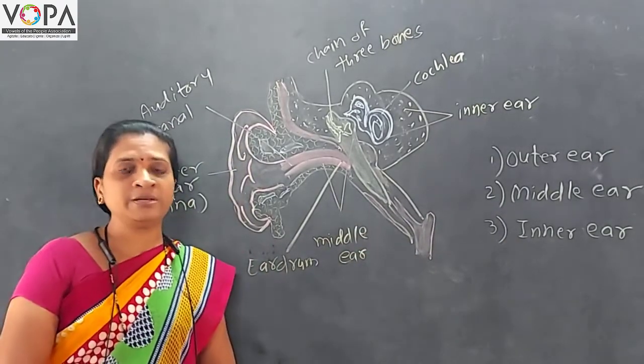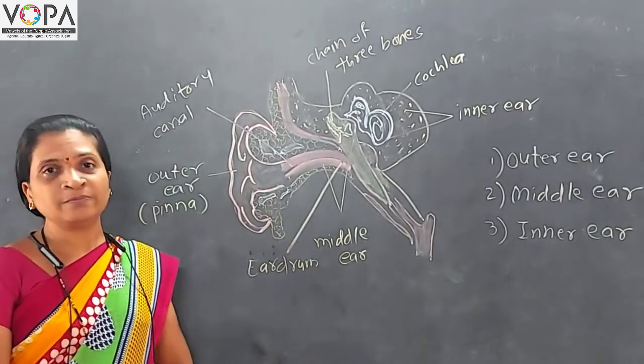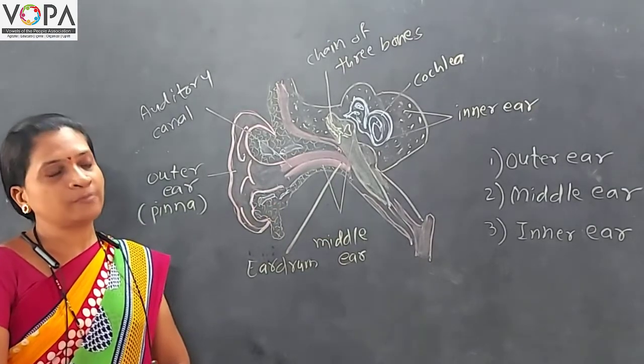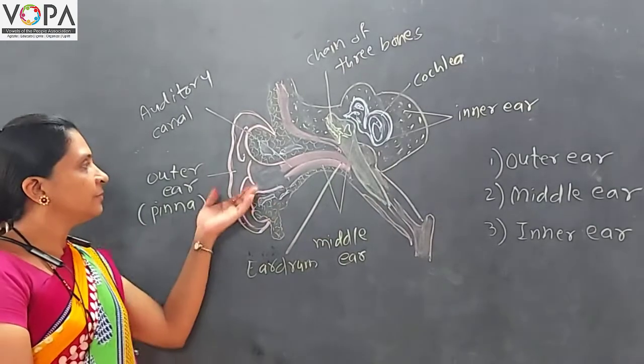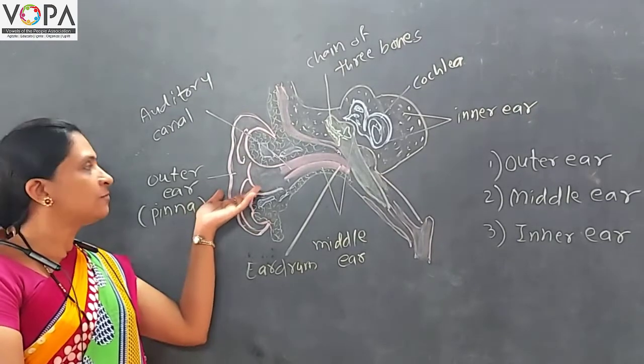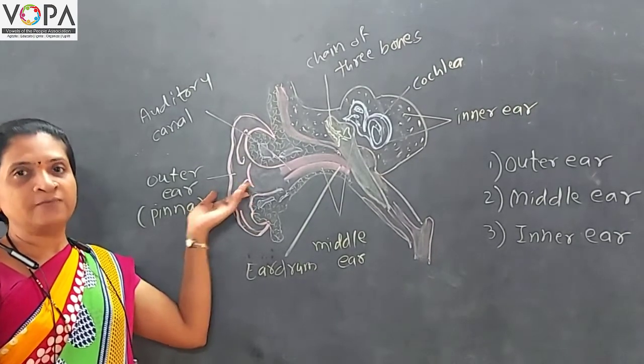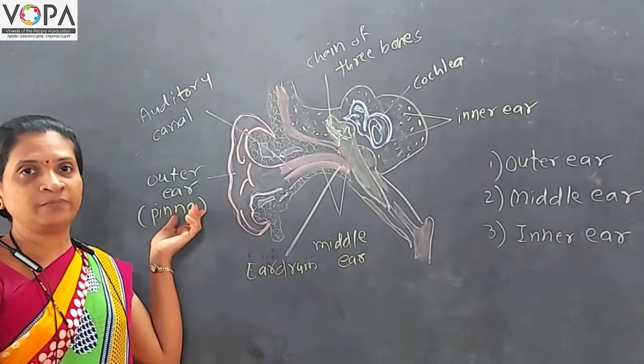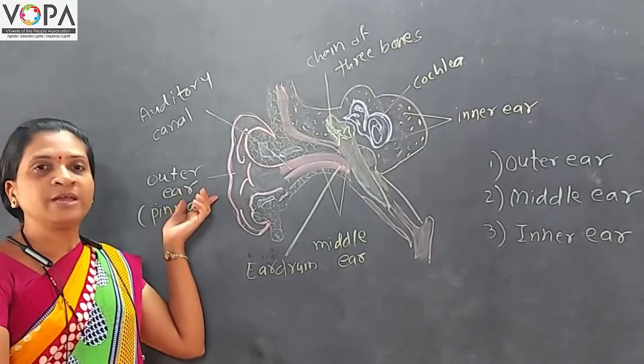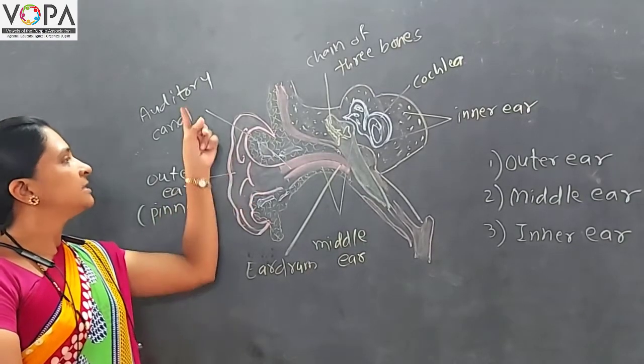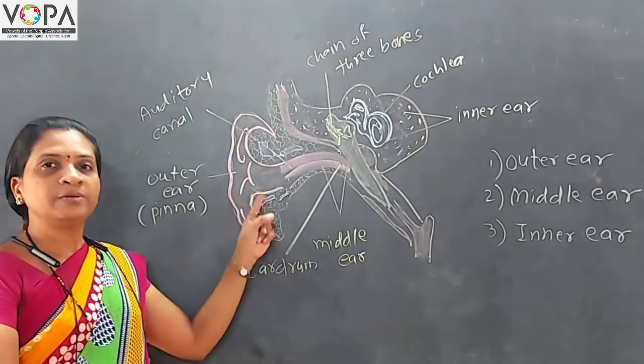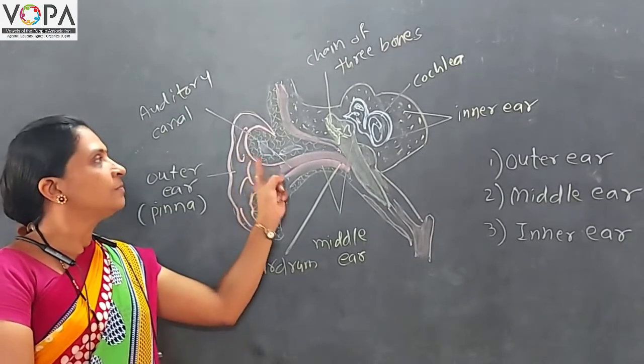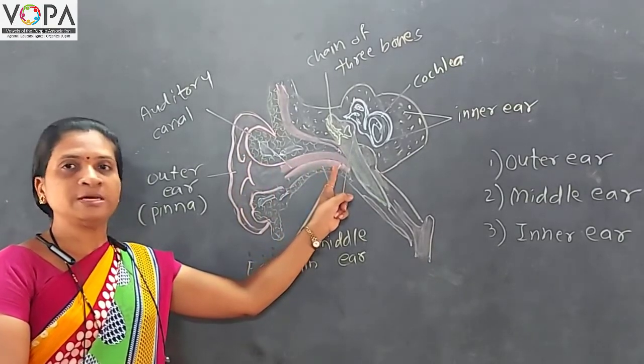What exactly happens in case of this ear? The sound from outside is firstly received by this outer ear, which is known as pinna. And then through this auditory canal, this sound travels towards the eardrum.